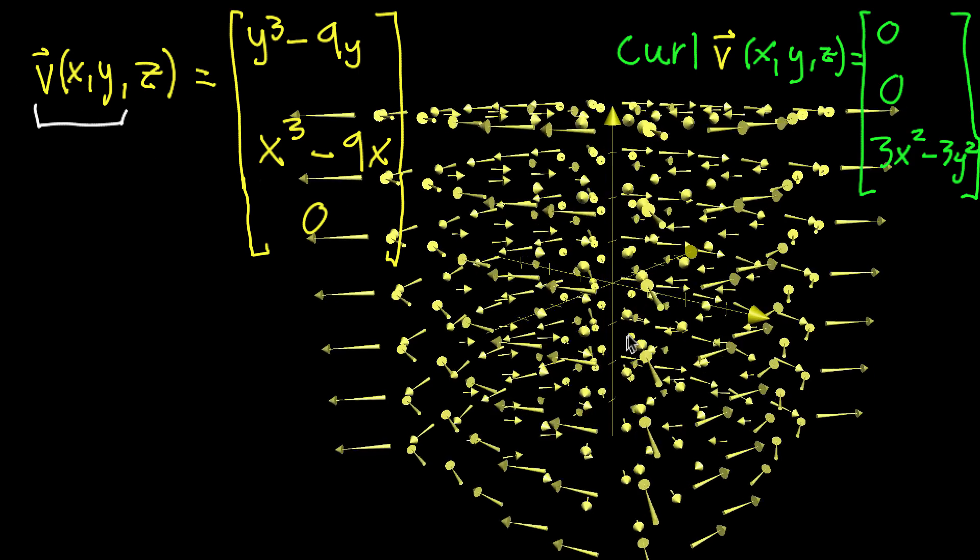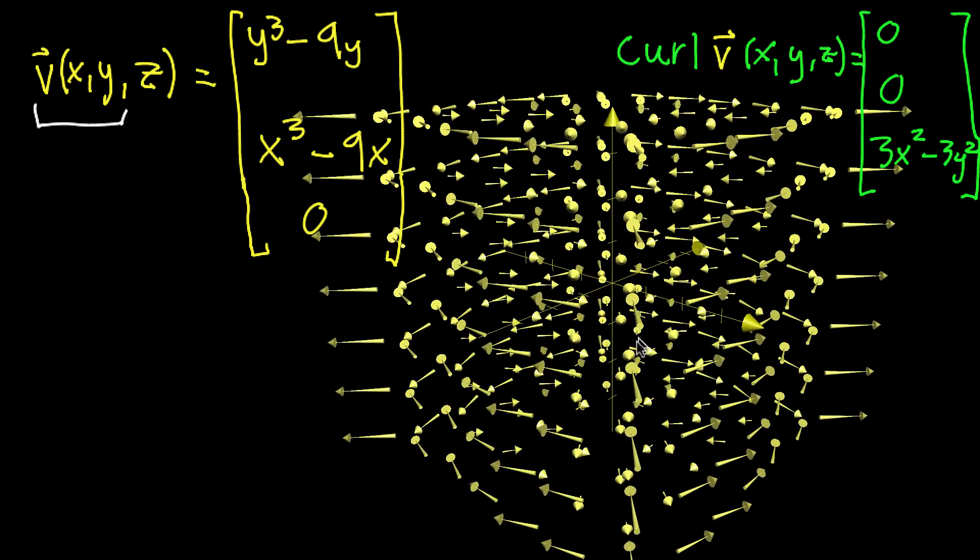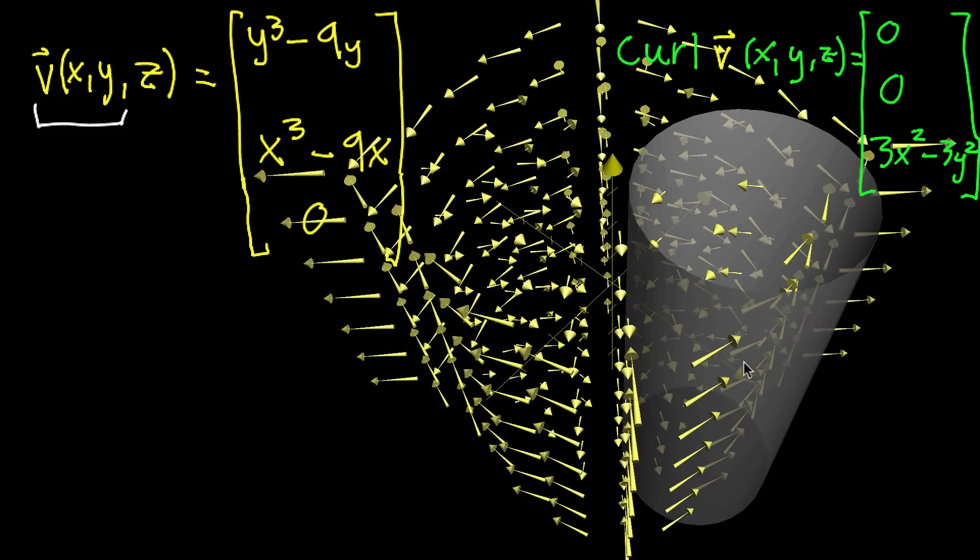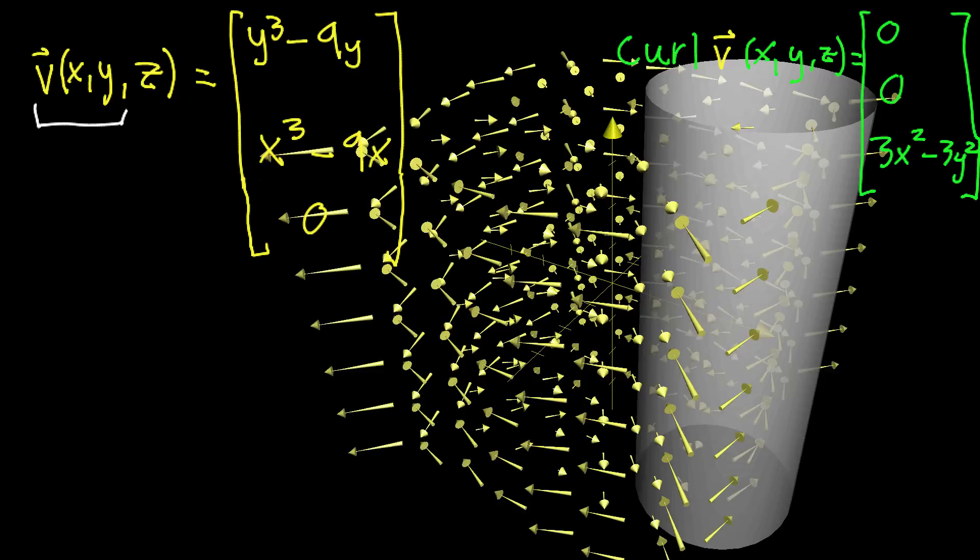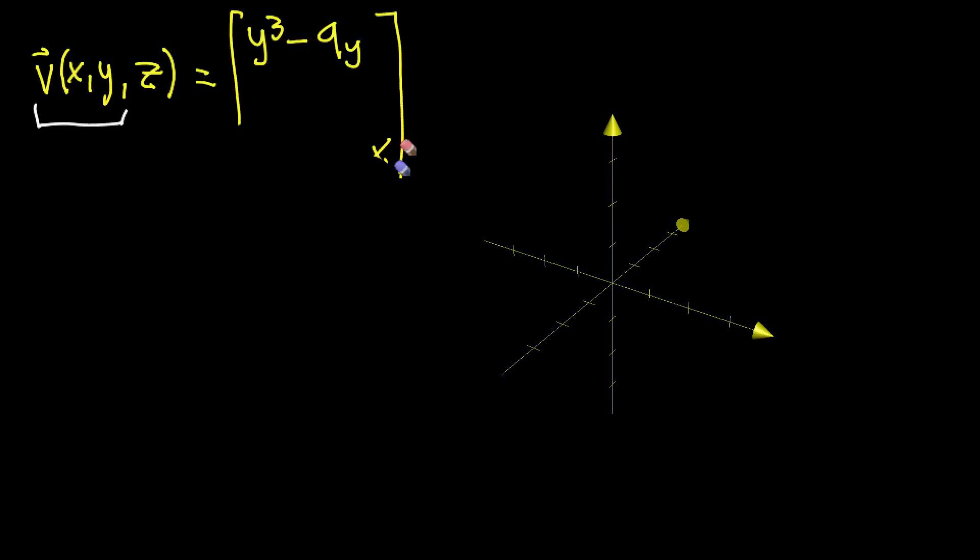And in this vector field, this one that was just kind of copies of a 2D one put above, it's almost contrived because all of the rotation happens in these perfect tornado-like patterns that doesn't really change as you move up and down in the x, y direction. But more generally, you might have a more complicated looking vector field. So I'll go ahead and kind of finally erase this since it's been a little bit in the way for a while and erase this guy too.